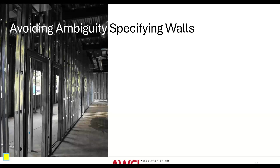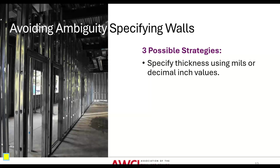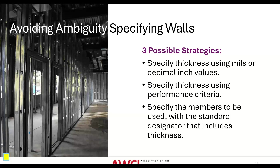As recommended by AISI and the Steel Framing Industry Association, use one of the following three options: First, specify thickness using mils or decimal inch values — for example, 33 mils or 0.0329 inches minimum thickness. Second, specify thickness using performance criteria — for example, L/360 maximum deflection, or deflection meeting L/240 with 5 PSF out-of-plane live load pressure. Third, specify members using a standard designator that includes thickness, such as 362S125-33 at 16 inches on center with direct-attached sheathing on both flanges.